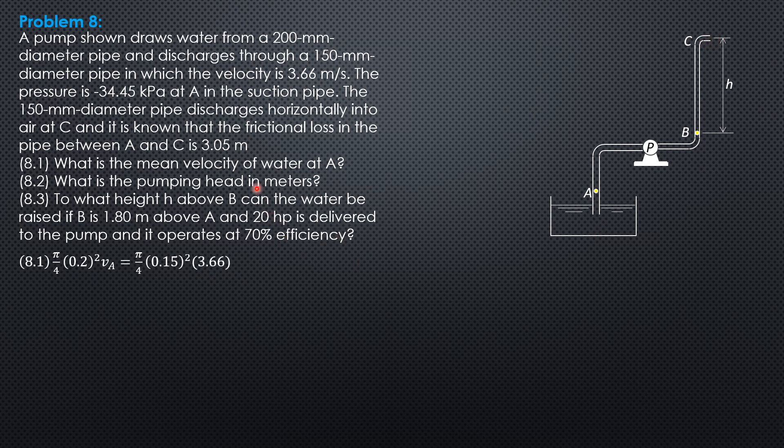From there we can compute the mean velocity of flow at A equal to, this is the suction line, 2.059 meters per second.